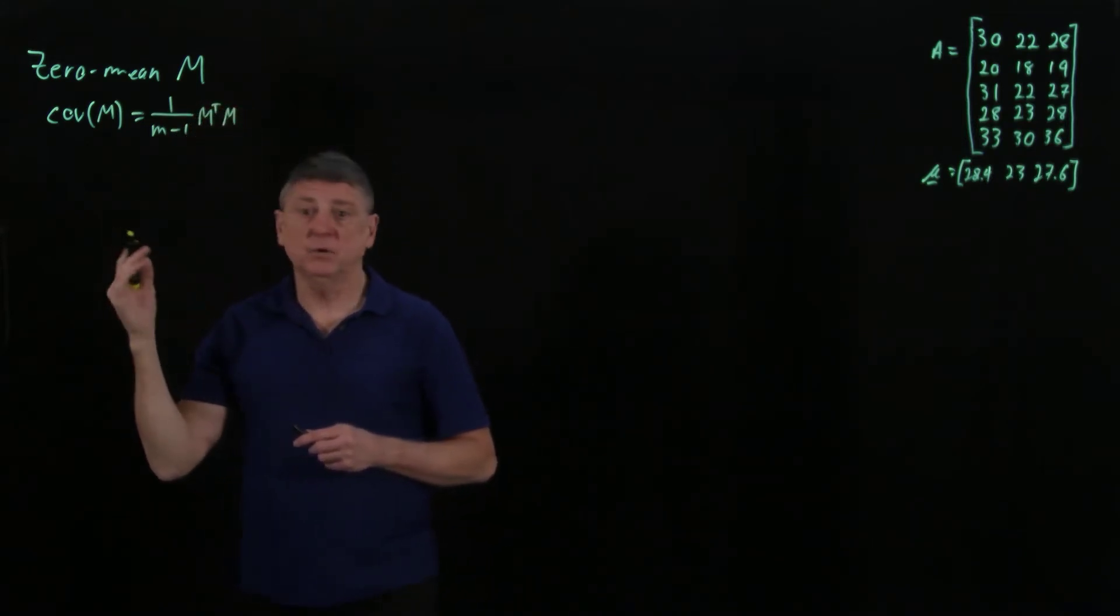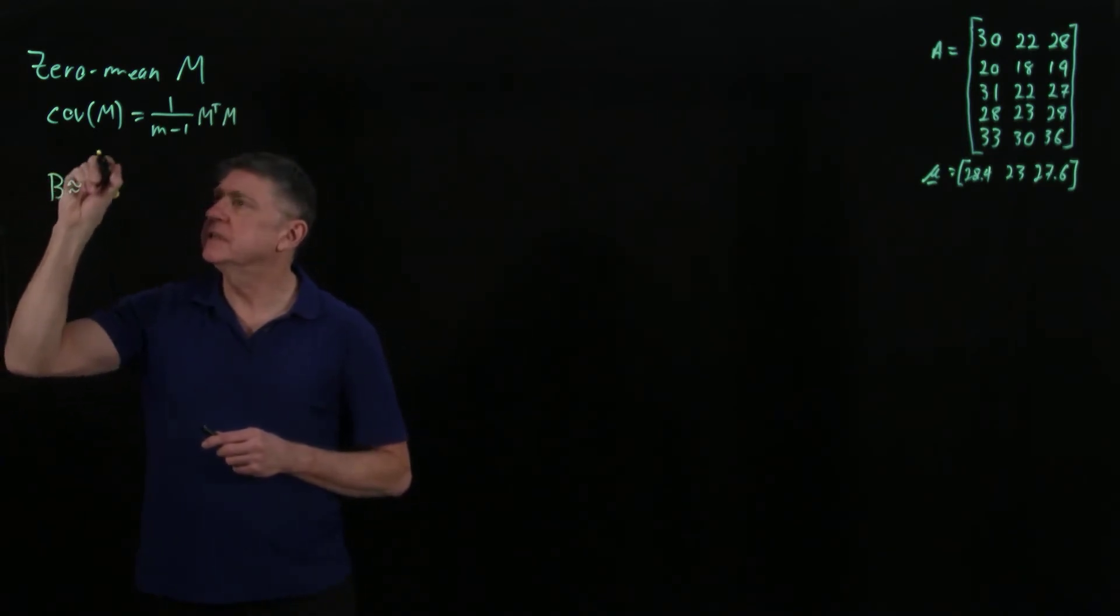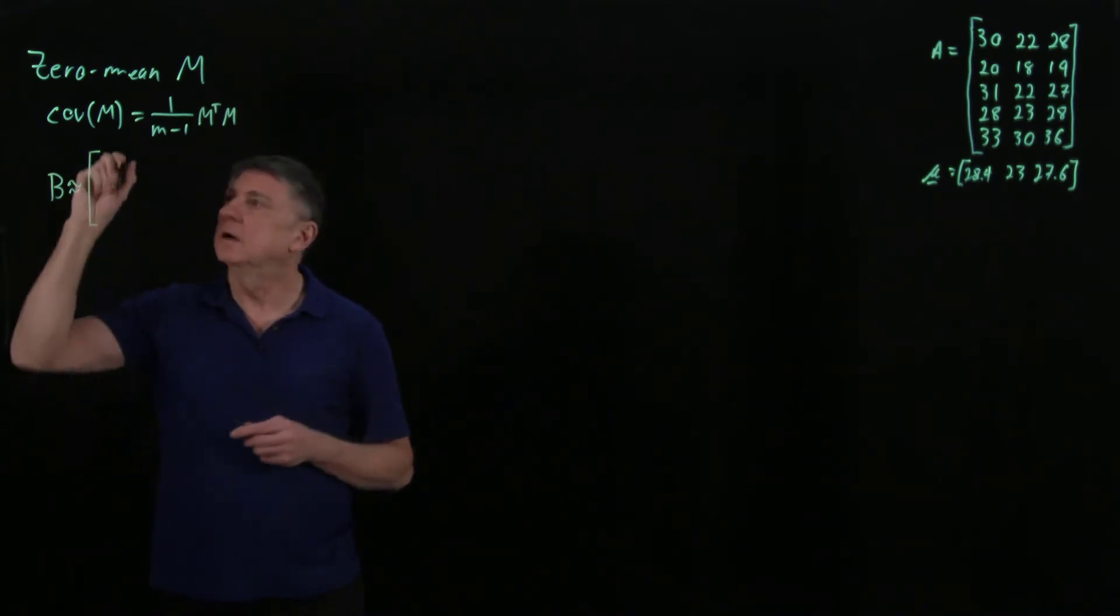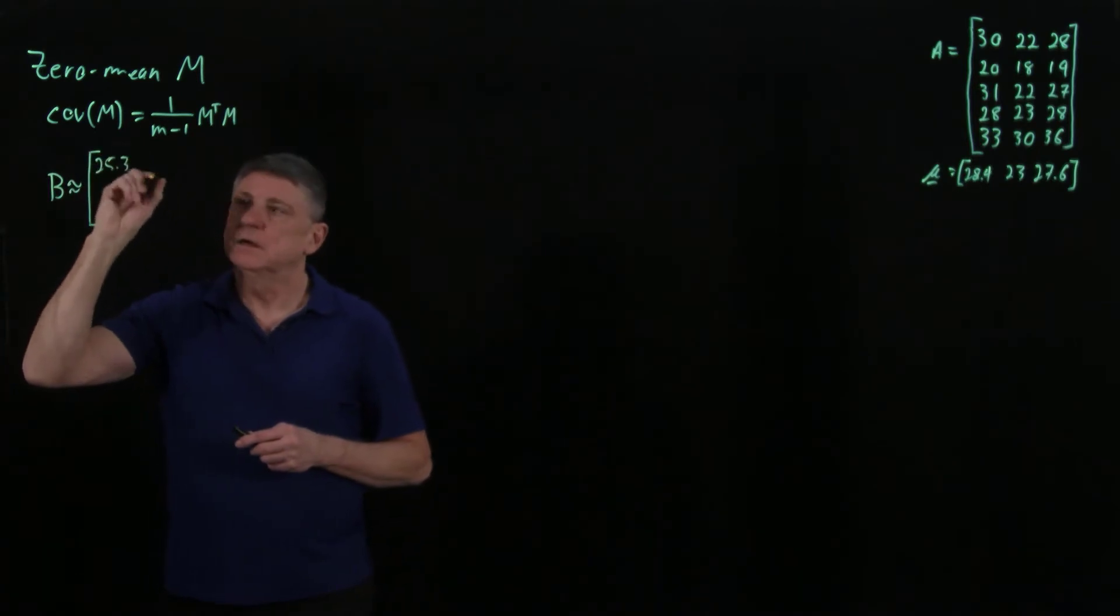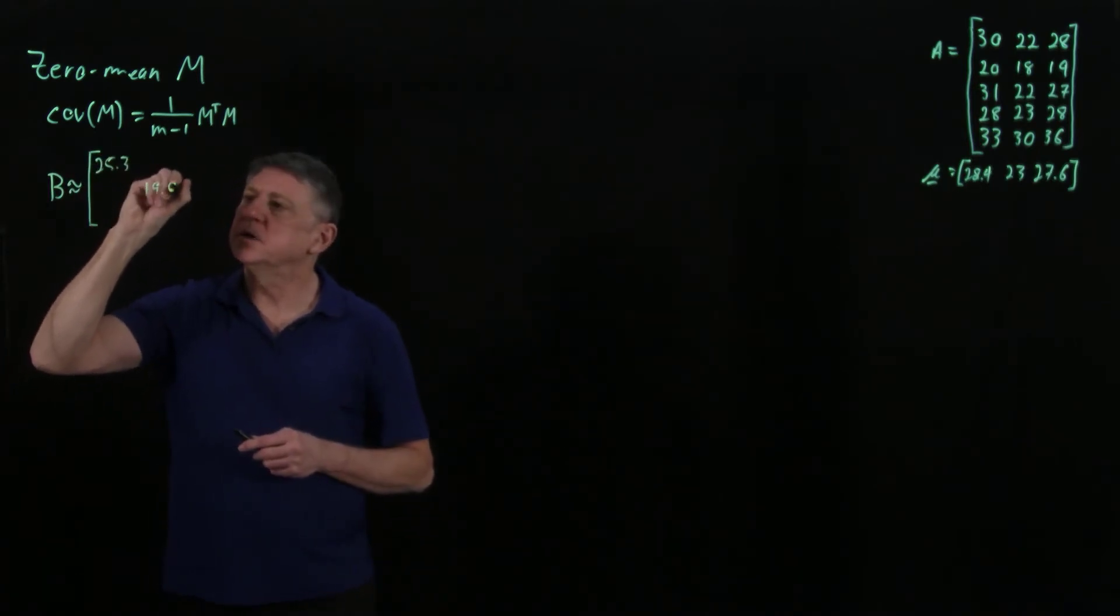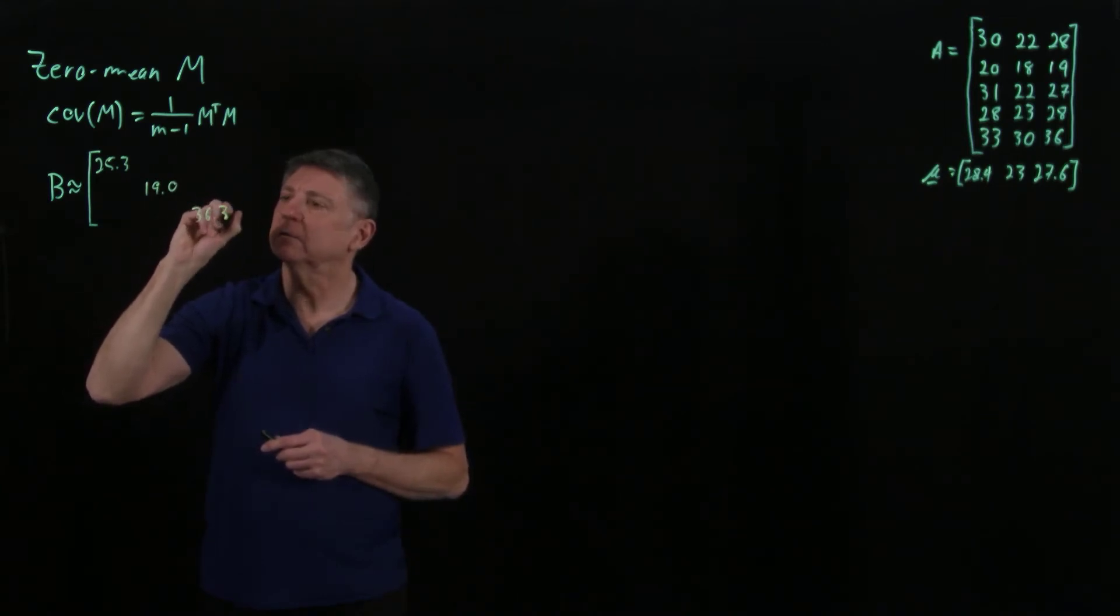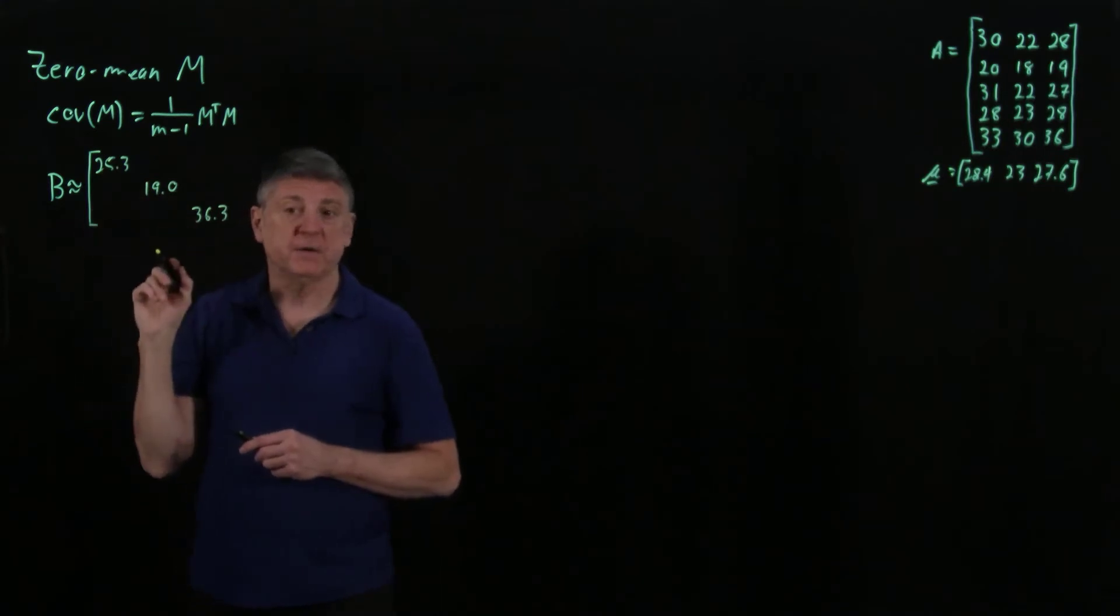In our example, the covariance matrix is approximately - to just one decimal point - 25.3, 19.0, and 36.3. Those are the variances, so that's how each one varies.